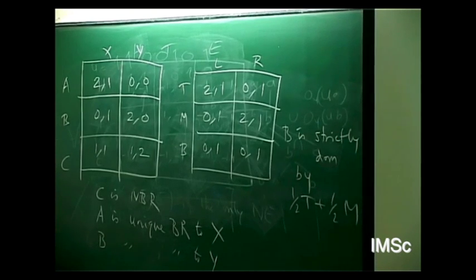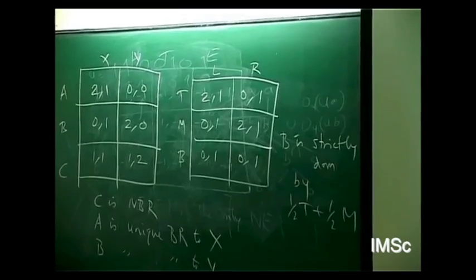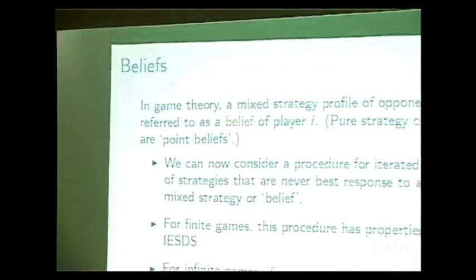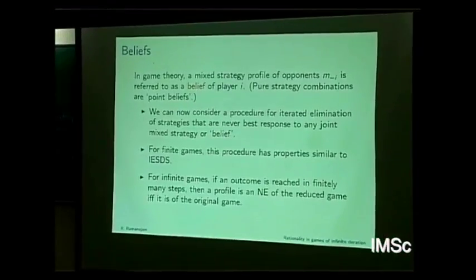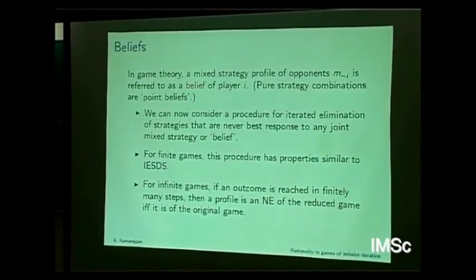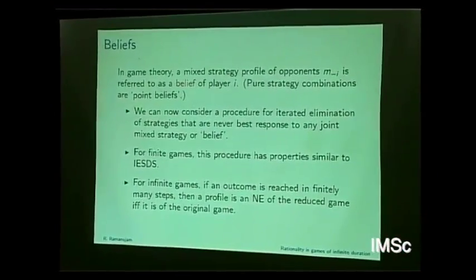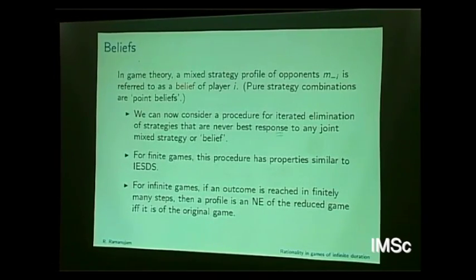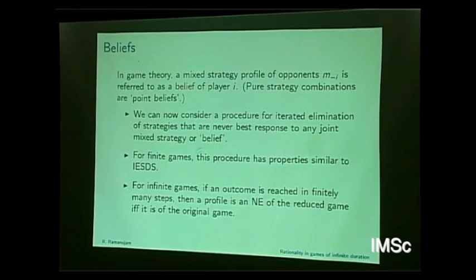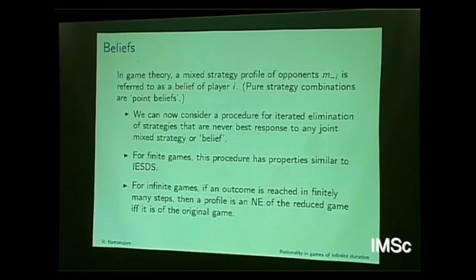In game theory, a mixed strategy profile of opponents is referred to as a belief of player i. Pure strategy combinations are called point beliefs. We can consider a procedure for iterated elimination of strategies that are never best responses to any joint mixed strategy or belief. This is the idea of construction of type spaces. For finite games, this procedure has properties similar to IESDS. For infinite games, if an outcome is reached in finitely many steps, a profile is in any of the reduced game if and only if it is of the original game.